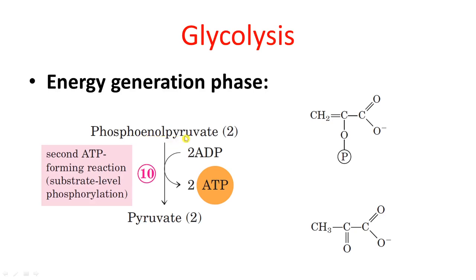In step 10, phosphoenolpyruvate is converted to pyruvate. ADP removes the phosphate group from PEP, generating ATP — this is the second ATP-forming reaction and again a substrate-level phosphorylation. The final product, pyruvate, contains no phosphate group. The enzyme involved is pyruvate kinase.